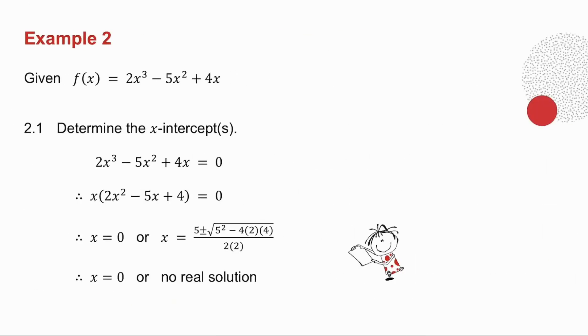2.1, they asked you to determine the x-intercept, so remember to find x-intercepts, you make y equal to 0. Take out a common factor, the trinomial doesn't factorize, so you will need to use the formula to solve for x, and you will discover that you get the square root of a negative, which means there is only one x-intercept at x equals 0.